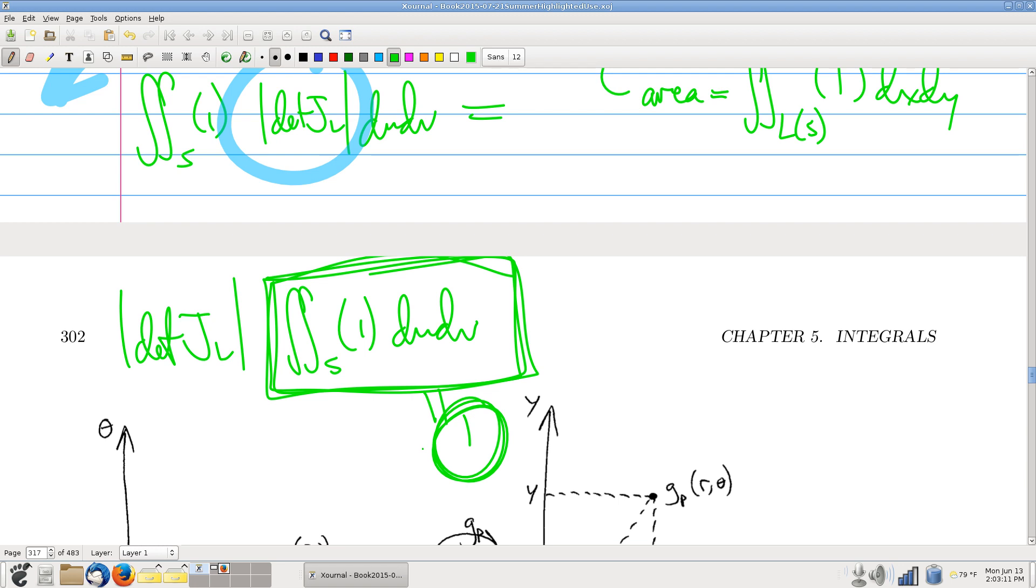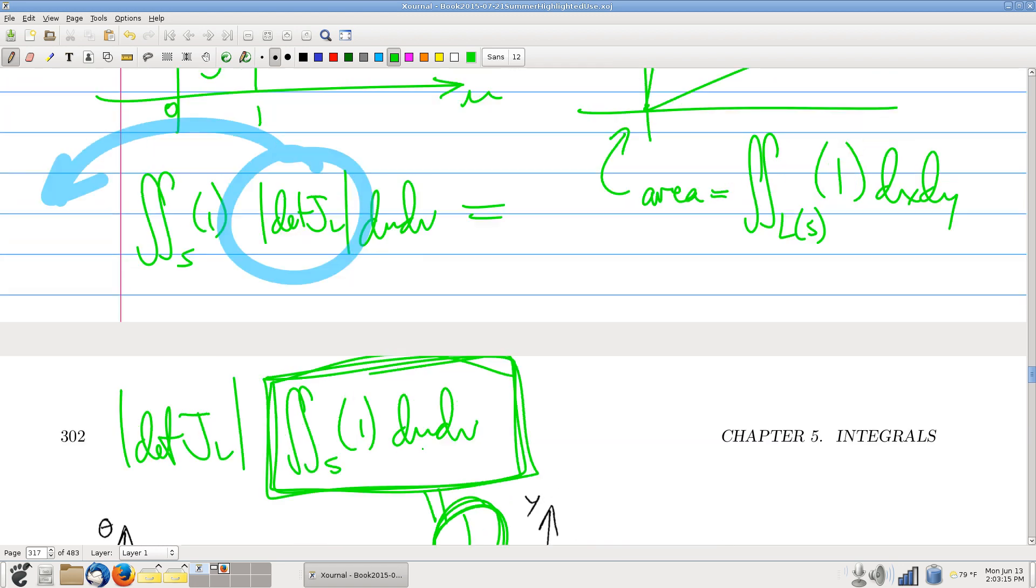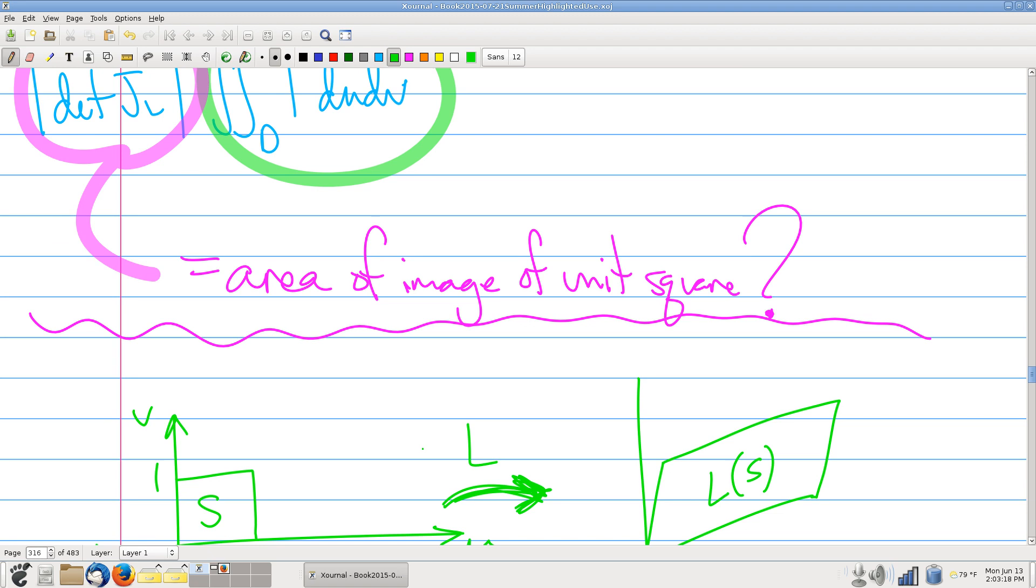Okay. Okay, so, now why were we doing this second calculation? Reminder, the reason we were interested in this second calculation is that we wanted to understand the area of the image of the unit square and ask ourselves,